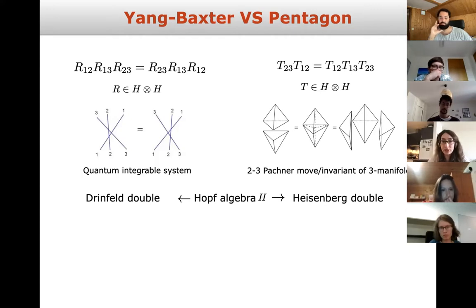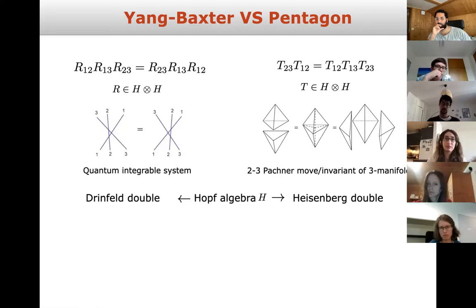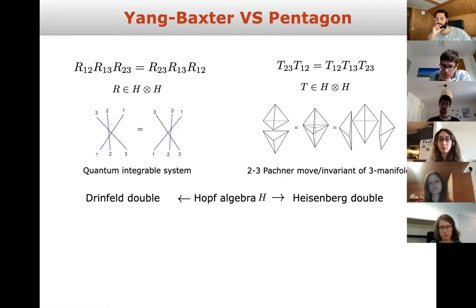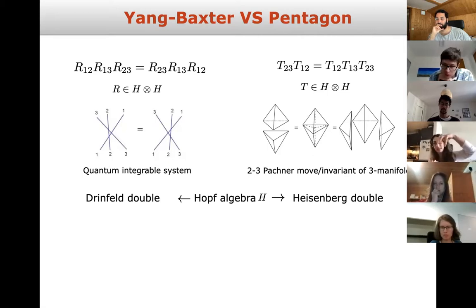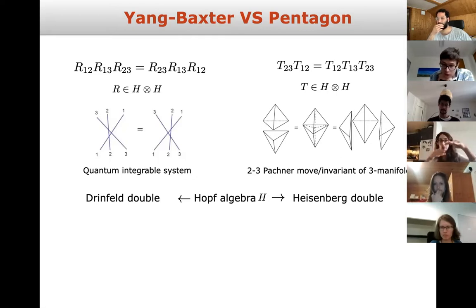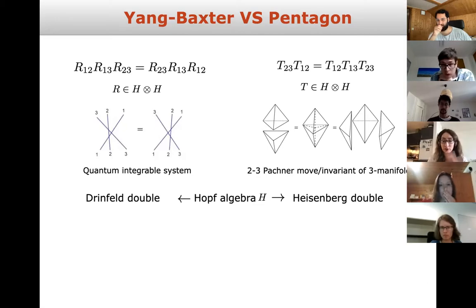The pentagon relation, pictorially, is like a 2-3 Pachner move: if we have two tetrahedra glued to each other, we can also divide it into three pieces. This 2-3 Pachner move also appears in invariants of three-manifolds. I will not use the Heisenberg double in the rest of the talk, but wanted to give a nice overview.